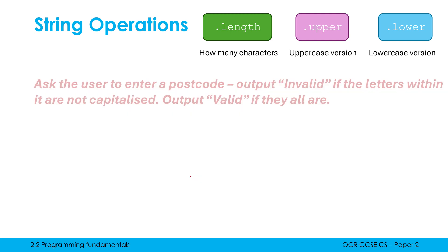To give another example where we use upper, we're going to ask the user to enter a postcode, output invalid if the letters within it are not capitalized, output valid if they all are. Here we don't need to have a loop because we're just going to say either invalid or valid, so just an if statement will be sufficient, but how are we going to tell if the user's postcode is capitalized or not? Well, we can't in an easy way unless I use dot upper or indeed dot lower.